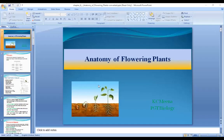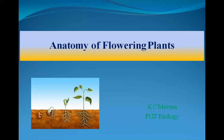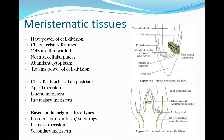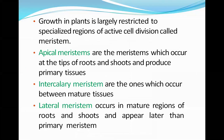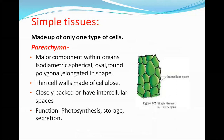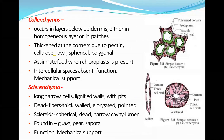We have completed up to the simple permanent tissues. We have seen the flow chart of plant tissues, the meristematic tissues, their characteristics, classification based on position and origin, and the three different types in detail. Then we started with the permanent tissues, and in simple permanent tissues we saw parenchyma cells, colenchyma cells, and sclerenchyma cells. Today we are going to start with the compound permanent tissue.